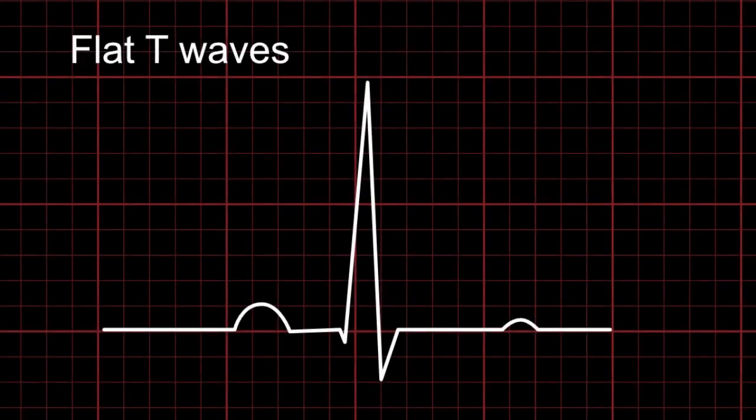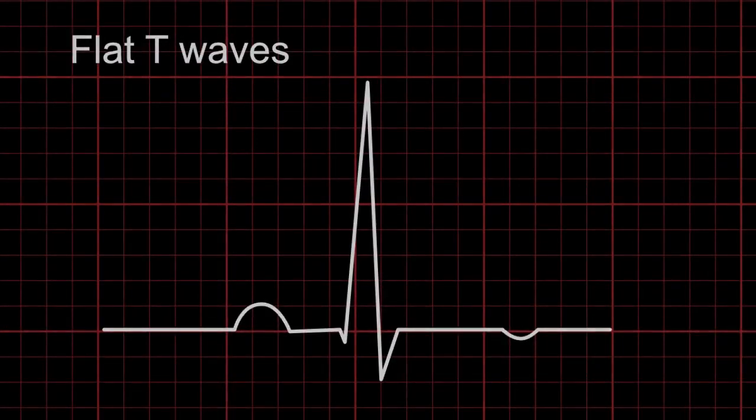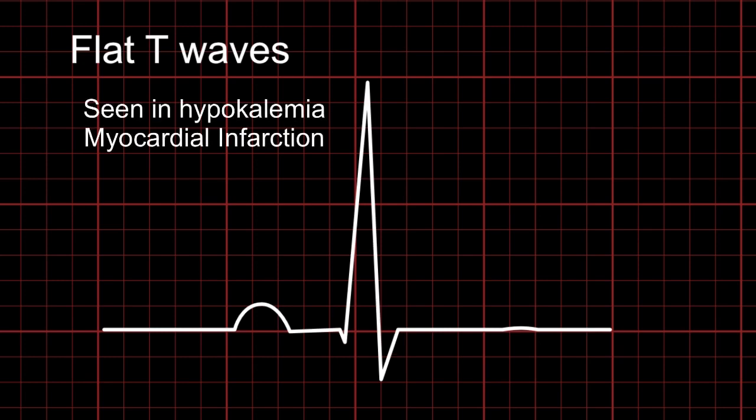Now coming to the second abnormality, flat T waves. Flat T waves may appear to have a small hump which is of 1 mm of height or maybe a negative 1 mm, and sometimes it can appear completely flat, commonly seen in hyperkalemia or in MI as well.